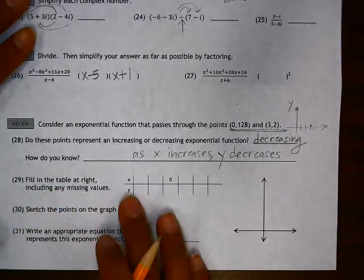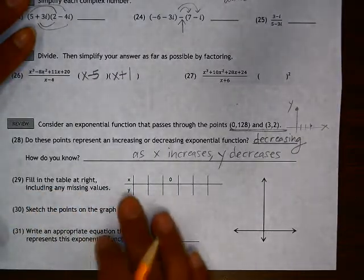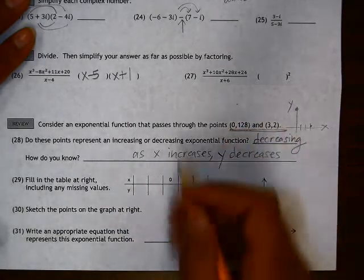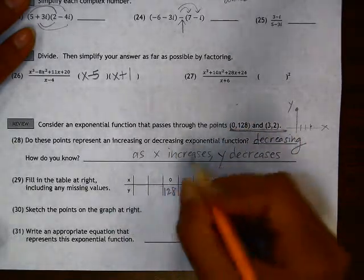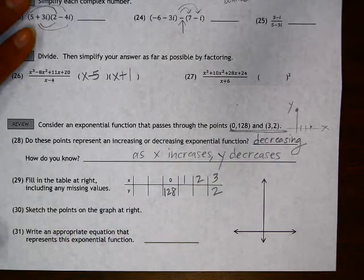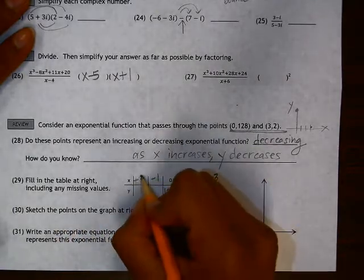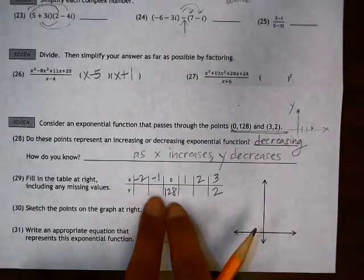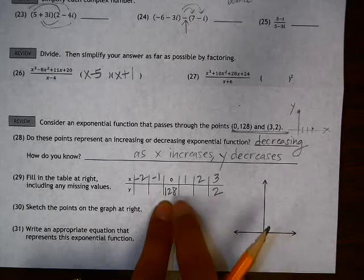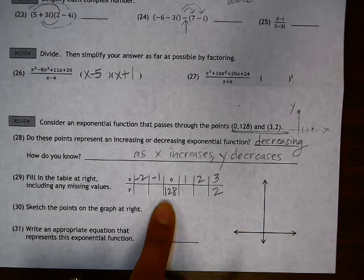Filling in the table at the right, so using this same two points, so 0, 128, and we have 3, 2, we're asked to fill in the rest of the values here. So we can deduce here what you would have to multiply by to get from here to here on the table.